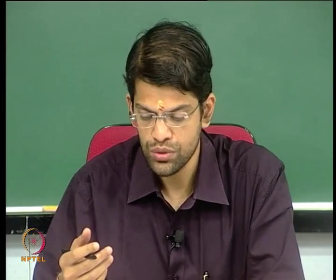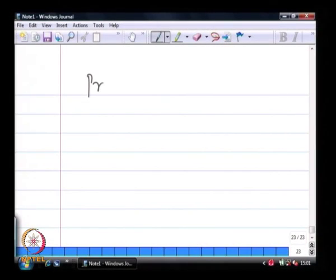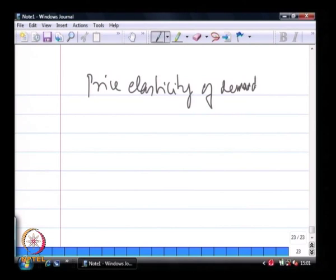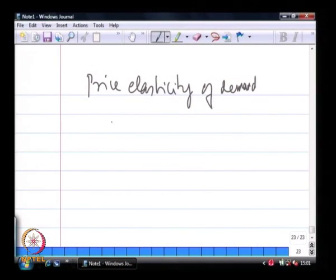We saw that some goods which are very critical are inelastic, meaning they are insensitive to changes in price, while goods that have substitutes are more sensitive to changes in price. That explained the price elasticity of demand — the changes in demand with changes in price, assuming income is constant. We also saw elastic demand, inelastic demand, elastic supply, and inelastic supply.